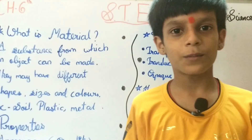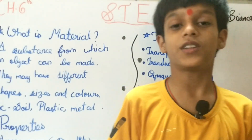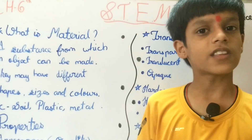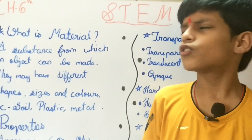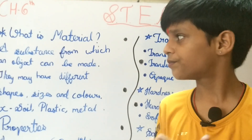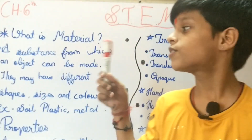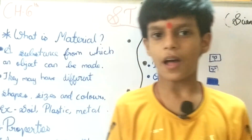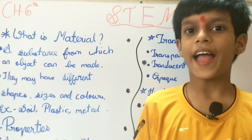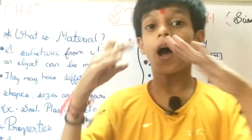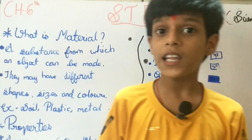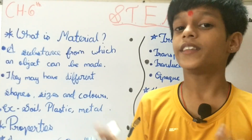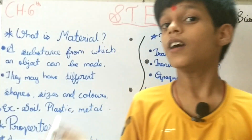Hello friends, welcome to my channel. Today in this video we are going to know about classic subjects and section science chapter 1. Do you know what is a material? The material is a substance from which an object can be made. For example, there is a soil and a potter has made a pot. So that soil is a material and that pot is an object.